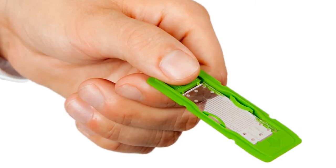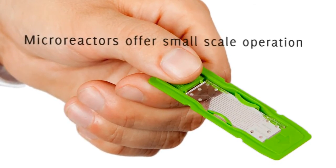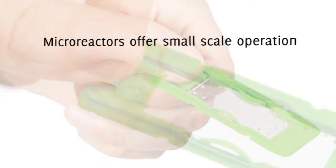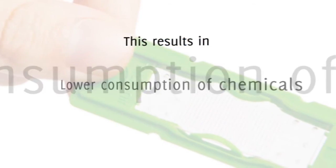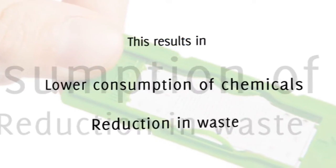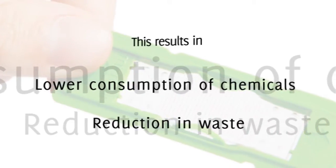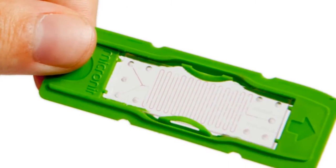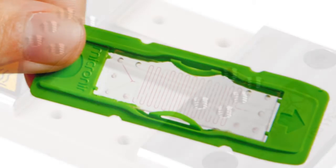In addition to these well-known benefits of flow chemistry, micro reactors offer small-scale operation. This results in lower consumption of chemicals and reduction in waste. To combine all these benefits, Future Chemistry developed a very easy way to get started with flow chemistry using our unique micro reactor platform, the FlowStart.